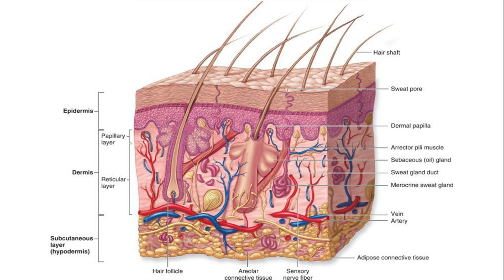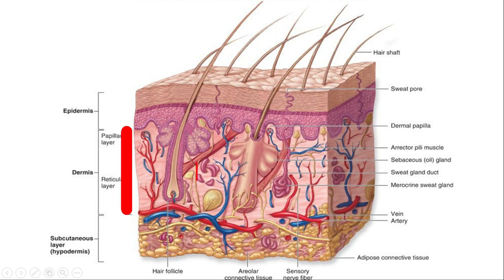In this video, I'll show you the reference in the description box. You can see that the skin has got three layers. The middle portion is the connective tissue layer — this is the dermis. Now, 'hypo' means below, so below the dermis you have the hypodermis.